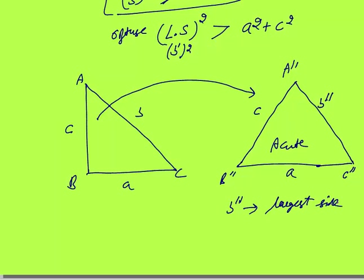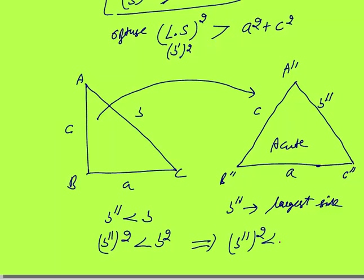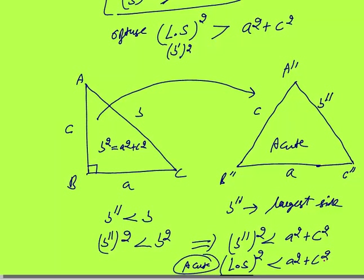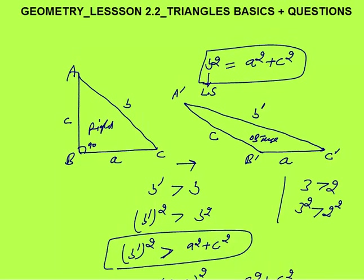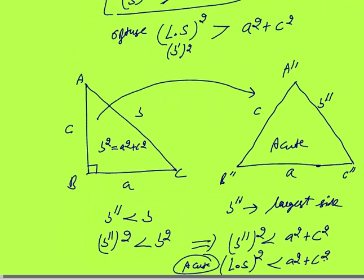By observation, B double dash is less than B, so B double dash squared is also less than B squared. This means B double dash squared is less than A squared plus C squared, since B squared equals A squared plus C squared in the right angle triangle. So in an acute angle triangle, the largest side squared is always less than the sum of squares of the other two sides. To summarize: right angle — equal; obtuse — greater than; acute — less than.